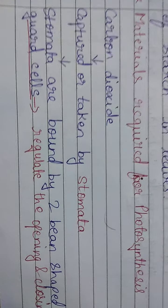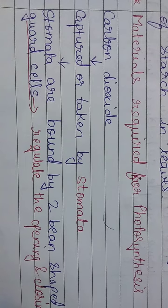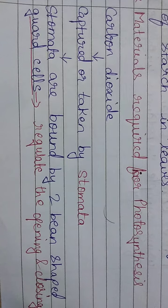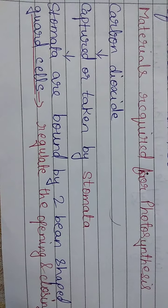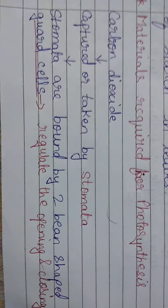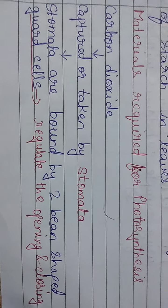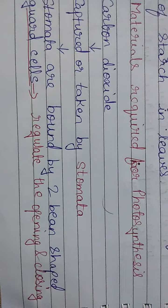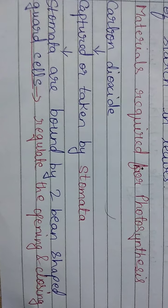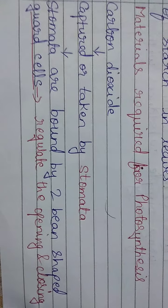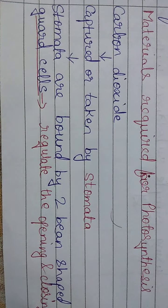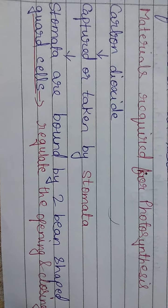Stomata are bound by two bean-shaped guard cells. These guard cells regulate the opening and closing of the stomata. Since photosynthesis takes place in the presence of sunlight, whenever there is sunlight the stomata open, and as soon as the sun sets or there is no sunlight, the stomata close. This is regulated by the guard cells bound on the stomata.